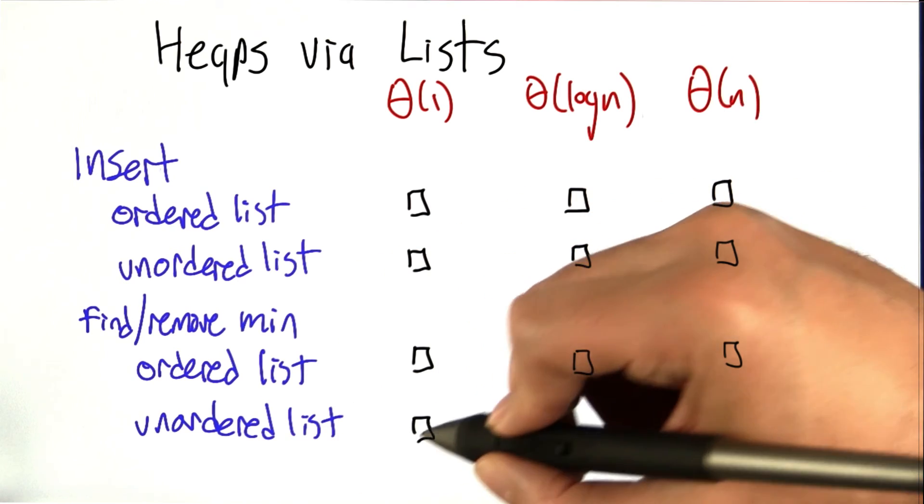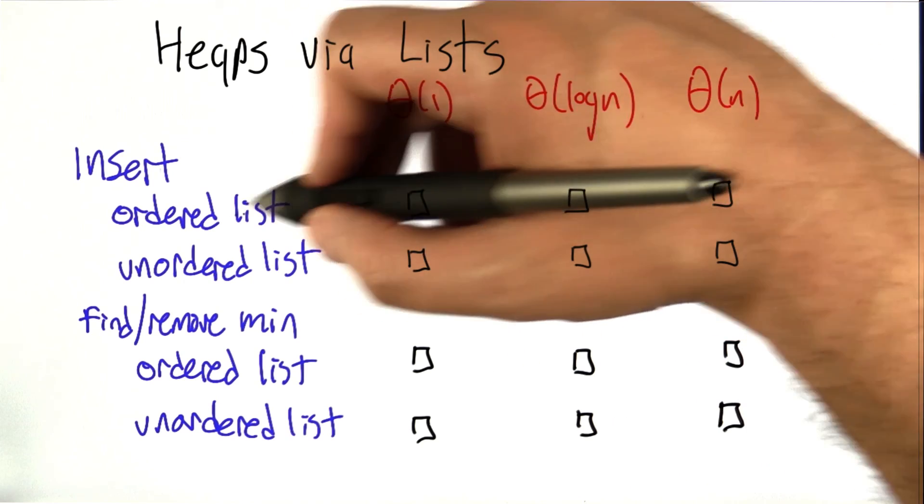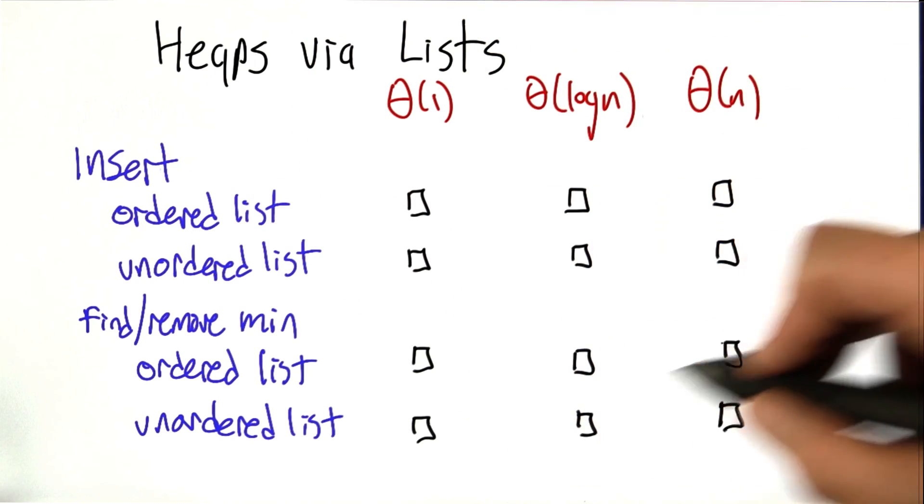And from an unordered list, to find the minimum value and remove it. For each of these rows, you should check exactly one of the boxes.